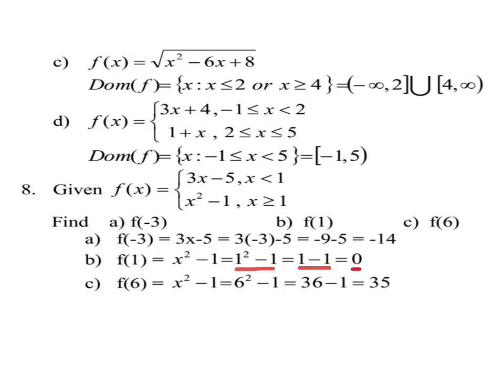For f(6): since 6 ≥ 1, f(6) = 6² − 1 = 36 − 1 = 35.